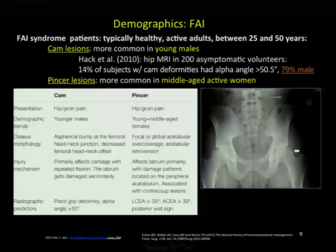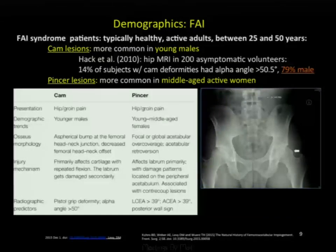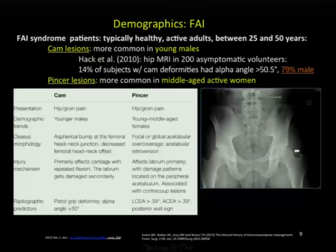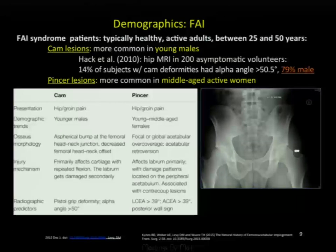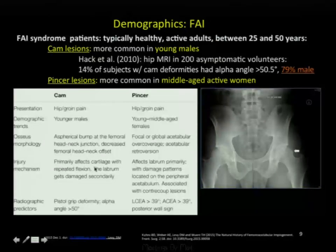Regarding demographics, CAM lesions are more common in males, with overall presentation between ages 25 and 50. A 2010 study of 200 asymptomatic subjects found 14 with CAM deformities had an alpha angle greater than 50 degrees, and the majority were male. Pincer lesions are more common in middle-aged active females. CAM primarily affects cartilage with repeated flexion, whereas pincer may affect the peripheral acetabulum earlier.